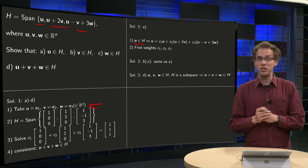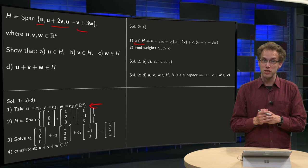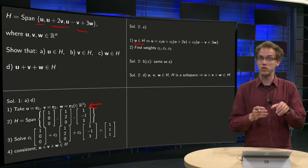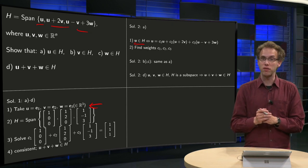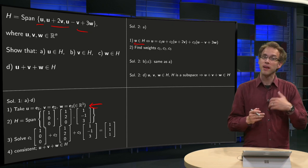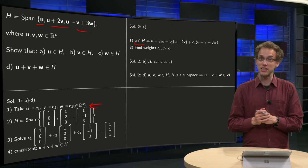For B and C you can apply the same method. You can find weights C1, C2 and C3 such that V is a linear combination of those three vectors and W as well. And then you arrive at exercise D.